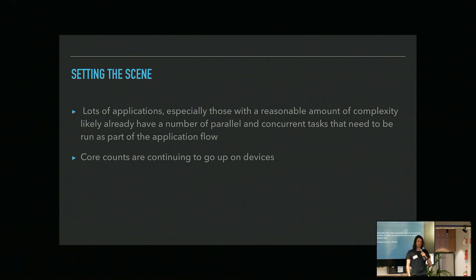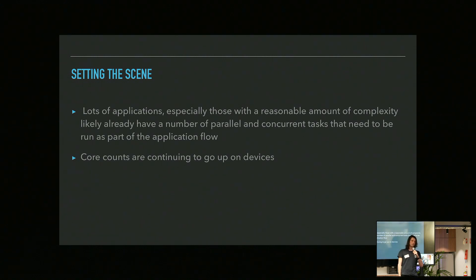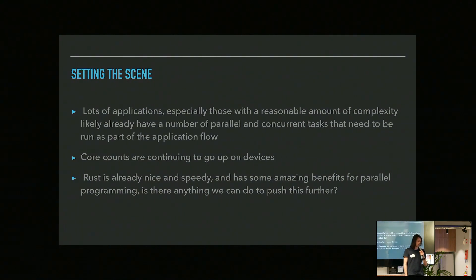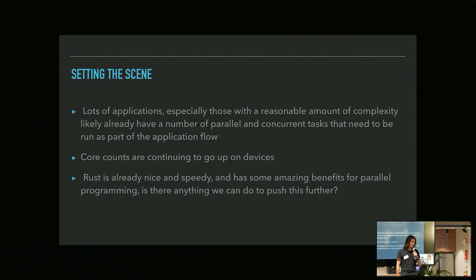Also, core counts on CPUs — or in the case of something like Lambda — go up. Every year CPU manufacturers are like, here's something with even more cores in it. And Rust is nice and speedy, it's got some cool parallelism things: sharing XOR mutability, Rayon, work stealing, et cetera.